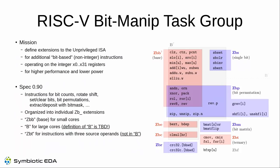We've just released the 0.90 version of the Bit Manipulation spec — we jumped from 0.36 to 0.90 to indicate the maturity of the spec. It's organized into individual set extensions, shown as colorful boxes on the right. The individual set extensions are pretty settled now. The key question is which of those extensions will actually be in 'B' and which will be left as more optional. The graphic shows two different suggestions for what B could look like.